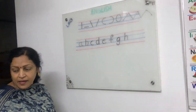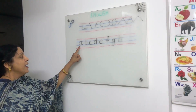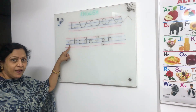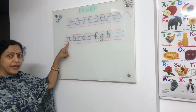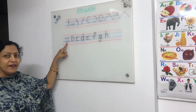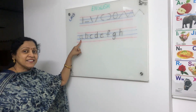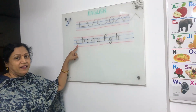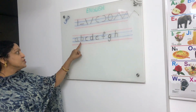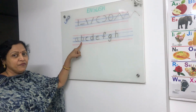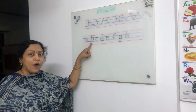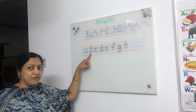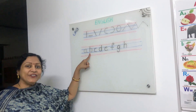Now see. This is small A. A for apple, aeroplane, axe, ant. Small b. B for ball, bat, butterfly, and balloon.